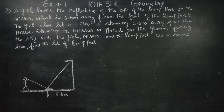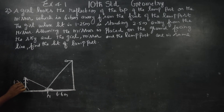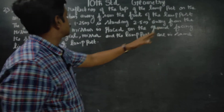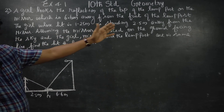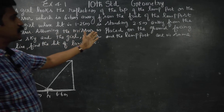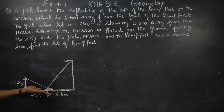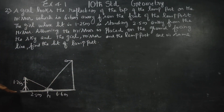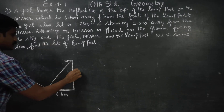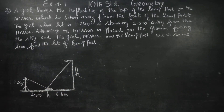The girl's height is 1.25 meters. She is standing 2.5 meters away from the mirror. Assuming the mirror is placed on the ground facing the sky, and the girl, mirror, and the lamp post are on the same line. Find the height of the lamp post.